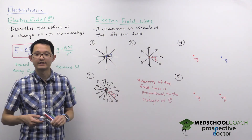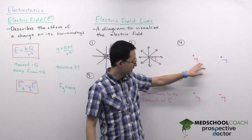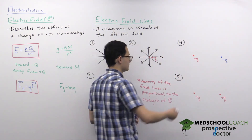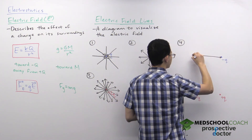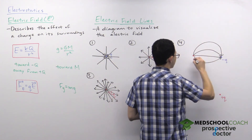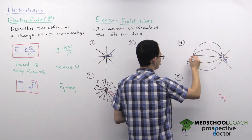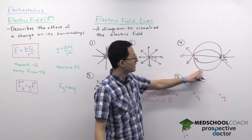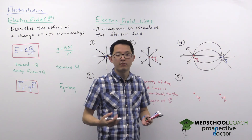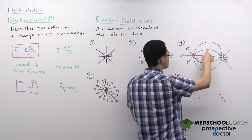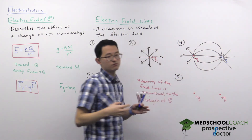Now, what do electric field lines look like with more than one charge? In the case of a dipole with equal and opposite charges, since field lines point away from positive charges and toward negative charges, the field lines point from the positive charge toward the negative charge. These field lines also describe the direction a positive test charge would move — so at any point, the charge would move tangent to the field line.